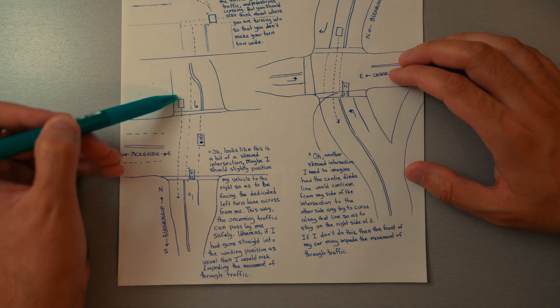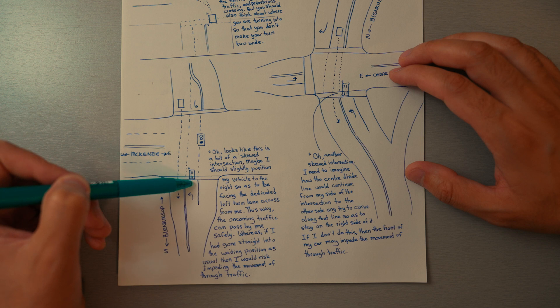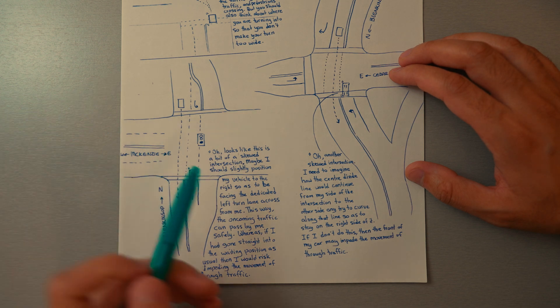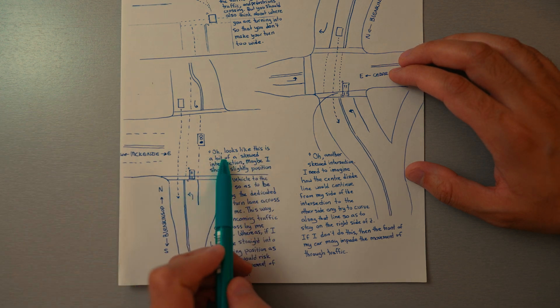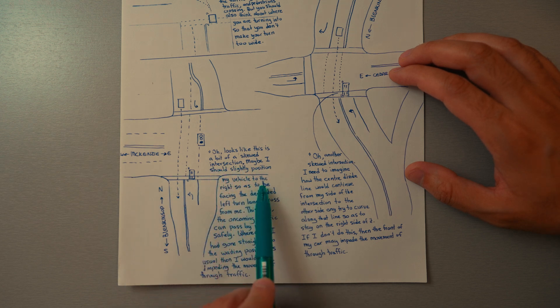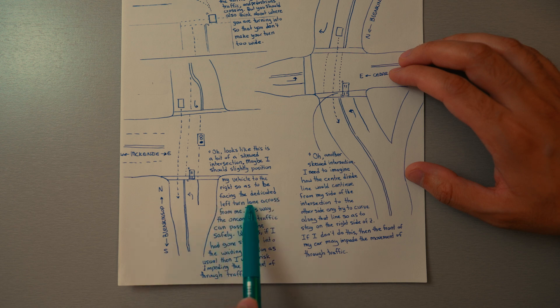In this case, you want to be lined up across from the other left turn lane. So you think, 'This is a skewed intersection. Maybe I should slightly position my vehicle to the right to be facing the dedicated left turn lane across from me.' This way, oncoming traffic can pass by safely.